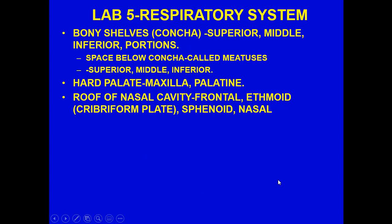There are also cartilaginous portions present. The bony shells are referred to as conchae, consisting of superior, middle, and inferior portions. The space just below each concha is called the meatus, also with superior, middle, and inferior regions. When we sniff, we create turbulence as air passes over the conchae, where olfactory sensory epithelium performs chemical analysis — the sense of smell. This information passes through the olfactory nerves, through the cribriform plate, and up into the olfactory bulb.